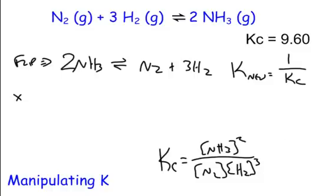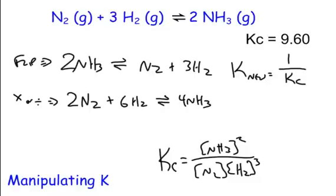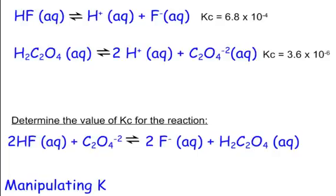We could also multiply or divide, just like in Hess's law. Let's say we multiply — coming back to the regular equation: 2N2 plus 6H2 in equilibrium with 4NH3. When we double the equation, remember that the coefficient goes in as an exponent. So the new K, because we doubled it, would be the old KC squared. So there are two things we can do: flip, or multiply/divide — and let's do both of those together, like a Hess's law problem.